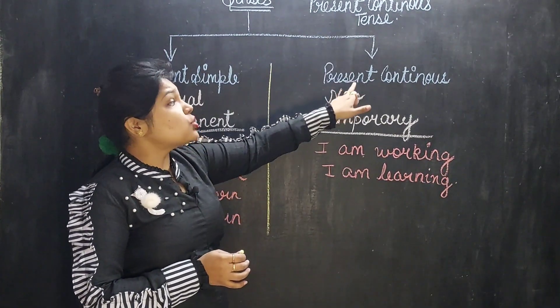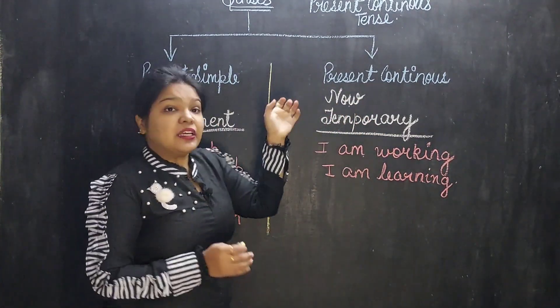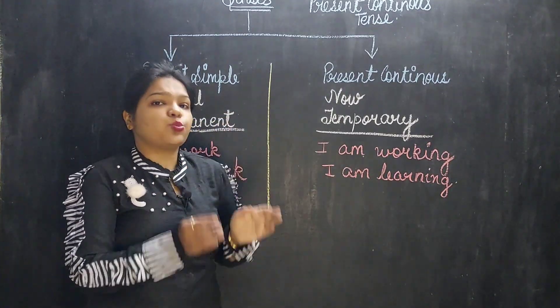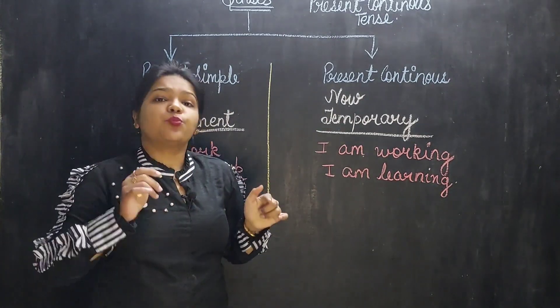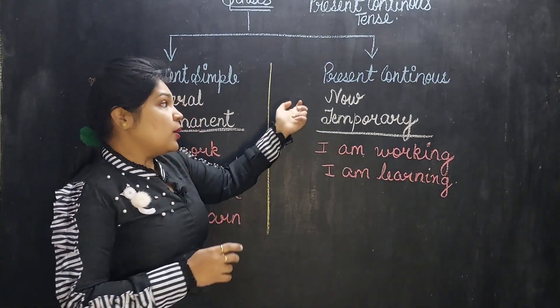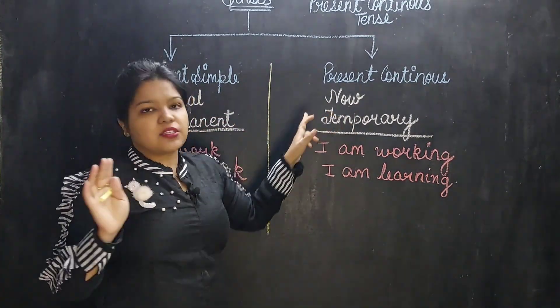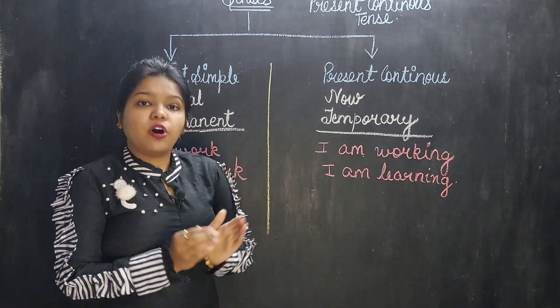But in the same way, present continuous tense does not talk about the things in general. They only and only talk about the things which are happening now. Means which are happening at this point of time. You can also say it is very vast, but this is not vast. It covers only this point of time. It just captures, you can say, this moment.